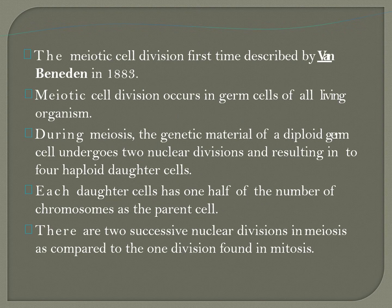The meiotic cell division was first described by Van Benden in the year 1883. Meiotic cell division occurs in germ cells of all living organisms. During this process, the genetic material of a diploid germ cell undergoes two nuclear divisions, resulting in four haploid daughter cells. Each daughter cell has one half of the number of chromosomes as present in the parent cell.